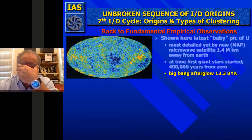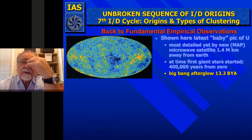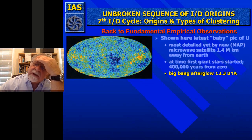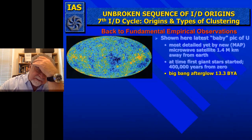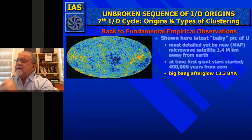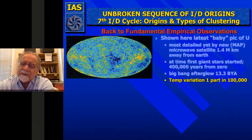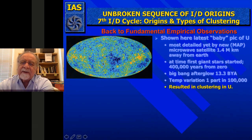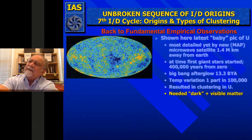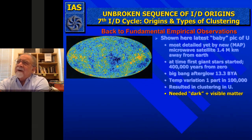From the nebulae, they condensed by gravitational attraction to more concentrated forms, which became the first stars. The first stars were huge compared to our star and very few in number, but we can still see them back in the universe by getting light from more distant sources. The Big Bang afterglow was about 13.3 billion years ago. The temperature variation was one part in 100,000, resulting in clustering in the universe. They might be fractals and a hierarchy at the same time, depending on which mathematics you use to model them.